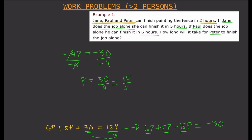So p equals 15 divided by 2 hours, which is seven and a half hours. That means it will take Peter seven and a half hours to finish the job alone.